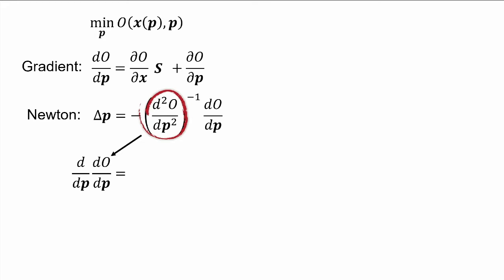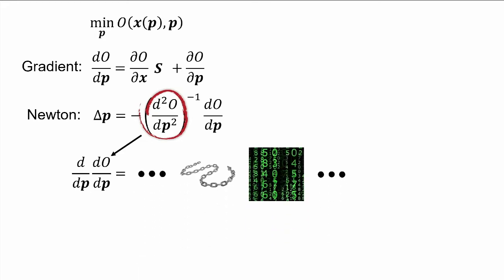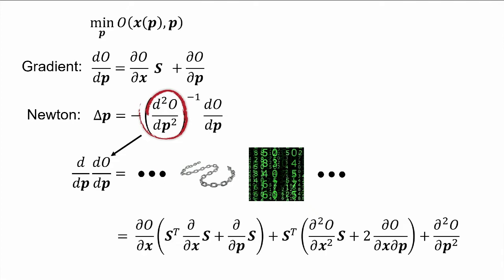We can compute this Hessian by taking another derivative of our gradient. Doing this implies a bunch of chain rules and matrix multiplications, and I don't want to bother you with this now. Please believe me when I tell you that we end up with this term. So, let's analyze this a bit. The components we have in here is, first of all, the sensitivity, which is good because we already computed it. Then we have a bunch of second-order partial derivatives of our objectives, which are typically straightforward to compute. And we also have these partial derivatives of our sensitivity.